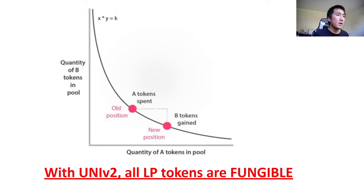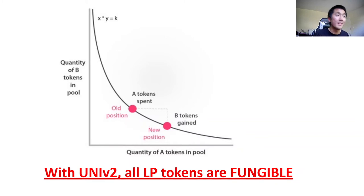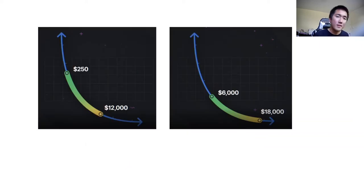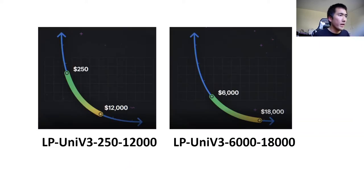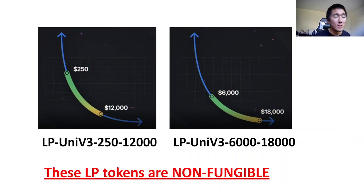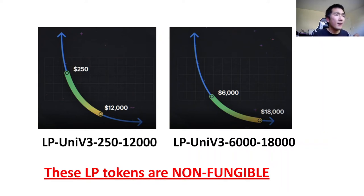Another major implication is that with V2, all LP tokens are fungible. Whether I provide $10,000 or you provide $100,000 of liquidity, we're all providing liquidity evenly distributed, so those LP tokens are interchangeable. However, with V3, we're all providing different amounts of liquidity for different price ranges, so these LP tokens are non-fungible.